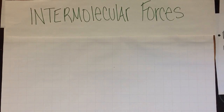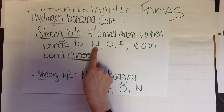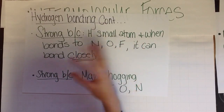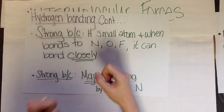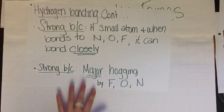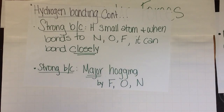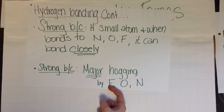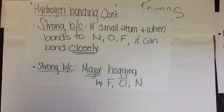Why is hydrogen bonding strong? Because hydrogen is a very small atom. When it bonds to nitrogen, oxygen, or fluorine — one of these, not all of them together — it can get in really close and make a tight bond. Another reason is that there's major hogging going on. Remember, hydrogen bonding is still a dipole-dipole, so we're still talking about polar molecules. Fluorine, oxygen, and nitrogen tend to be major hoggers. When hydrogen shares with fluorine, fluorine hogs the electrons. When hydrogen is bonded to oxygen, oxygen hogs the electrons. Nitrogen also hogs the electrons. So it gets in nice and tight and pulls in those electrons.